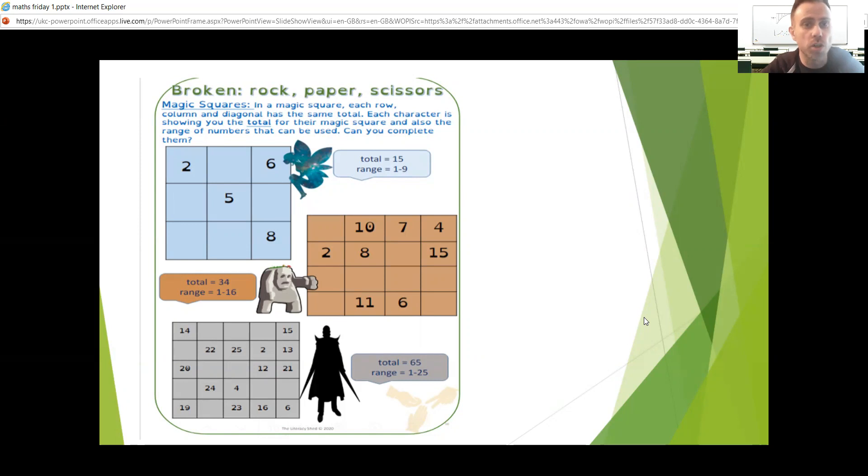Each character is showing you the total for their magic square and also the range of numbers that can be used. So you can use on the first one, it says the total for each row, column or diagonal is 15. It's always got to make 15. If you look there, you've got a 2, a 5 and an 8. That, when you add them together, makes 15. Also, it says the range is 1 to 9. So you can only use the numbers 1 to 9 in that square. Makes sense.